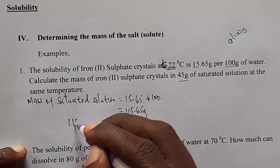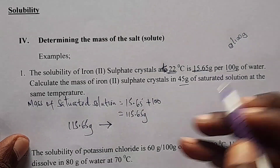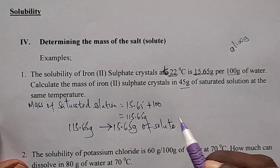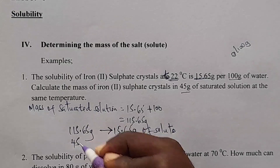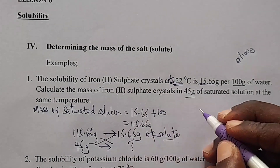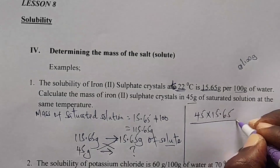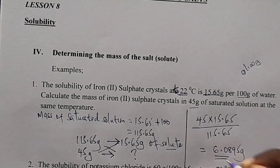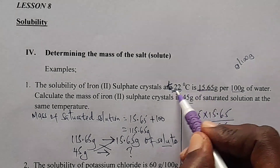We have 115.65 gram of saturated solution containing 15.65 gram of solute. We are told: what mass of iron 2 sulfate crystals is in 45 gram of saturated solution? We cross multiply: 45 times 15.65 divided by 115.65, giving us 6.0895 gram. That is the mass of the iron 2 sulfate crystals in 45 gram of saturated solution at 22 degrees Celsius.